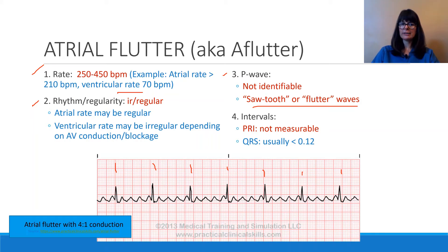The QRS in atrial flutter is usually normal, which is less than 0.12 seconds. Looking at the QRS complex here — starting at a thicker box — that would be one, two: in our case, 0.10 or 0.08, which makes the QRS complex normal.